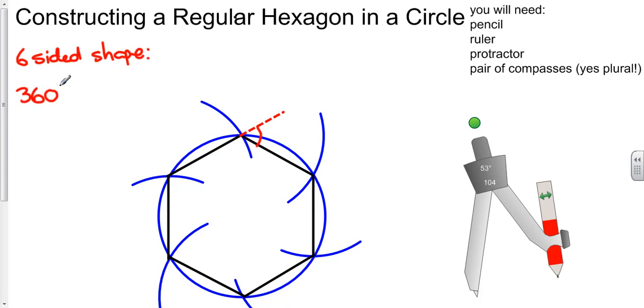So if I do 360 degrees and divide that by six because it's a six-sided shape, that gives me 60 degrees.